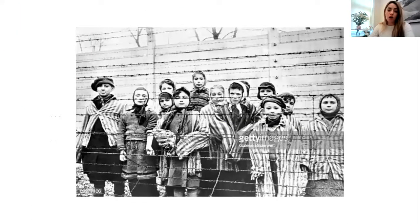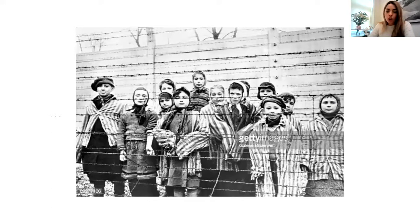I've got a picture here to start off with. We can see in the picture that there are lots of children and some adults, all wearing some striped shirts. When Bruno looks out the window, he can see lots of boys and men and uncles and grandfathers all wearing what looks like striped pajamas, and this is a picture of what those people may have looked like. What do you think of their clothes? How do you think they are feeling? Why do you think there's barbed wire there?